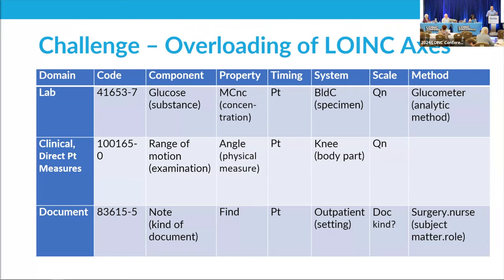I have an example of what we're talking about. Historically, the traditional model for the development of LOINC codes is the six-axis model: component, timing, property, system, scale, and then method — which is kind of optional. But what we've realized, and what this slide is meant to represent, is that over the years we've overloaded that model.